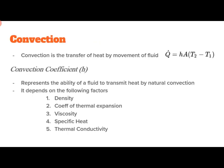We have already seen the various modes of heat transfer in a transformer. Convection is one of the important modes, and among the three — convection, conduction, and radiation — convection is the most dominant mode of heat transfer. Convection is the transfer of heat by movement of fluid and is given by Q equals H·A·(T2 minus T1), where H is known as the convection coefficient, representing the ability of a fluid to transmit heat by natural convection.